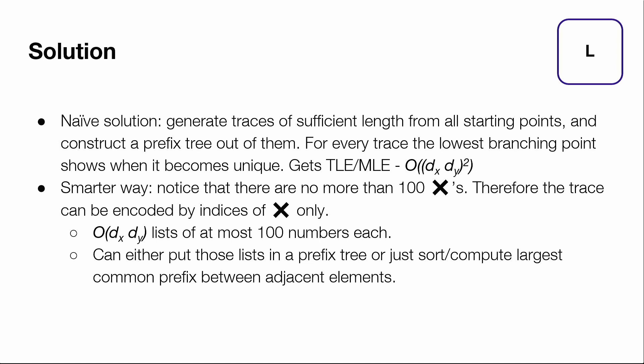However, the smarter way is to use the fact that there are no more than 100 crosses. Therefore, by encoding the whole sequence only by positions of those crosses or the indices of those crosses in the sequence, we encode every trace by only 100 integers, and comparing those sequences with each other can be done in the same way as comparing the original traces, which is just lexicographical order.